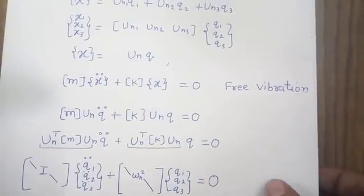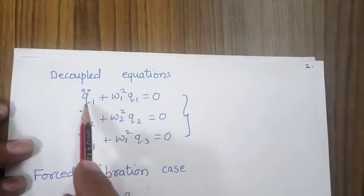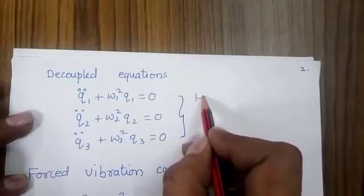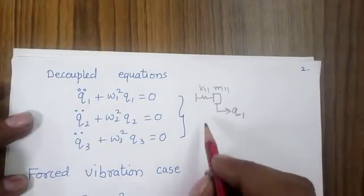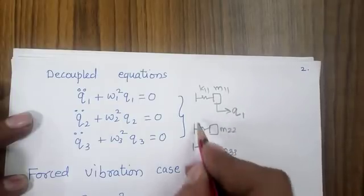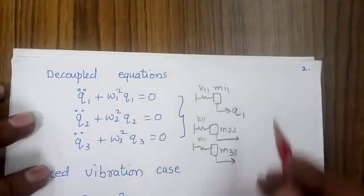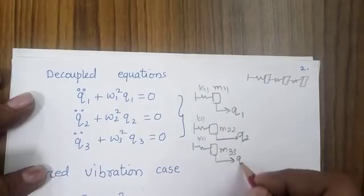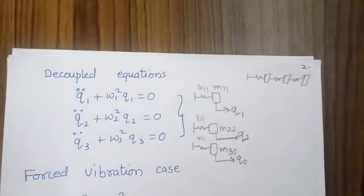Opening the matrix form gives a set of three decoupled equations, each representing a single degree of freedom system with its own mass and stiffness, with displacement now expressed as Q1, Q2, and Q3. This is the philosophy of modal analysis: a three degree of freedom system is transformed into three independent single degree of freedom systems, and the response is calculated for each individually.